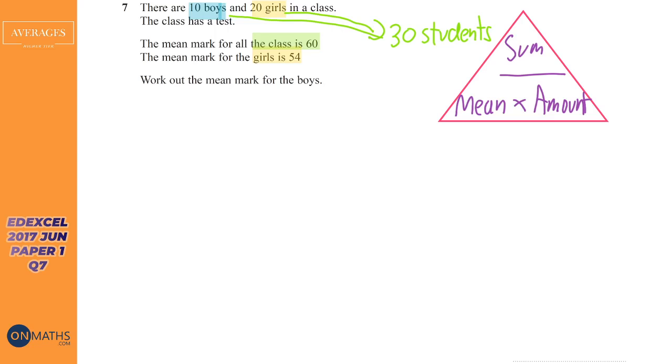Pretty complicated but we'll do it step by step. We're going to bring in our beautiful triangle again because we will need it for this question as well. So sum of girls, again just show the examiner everything you do. We know from our triangle the sum is the mean times the amount so the mean is 54 and the amount is 20. So again a calculator paper so I can get my calculator out thankfully and we've got 1080. So the girls add up to 1080.